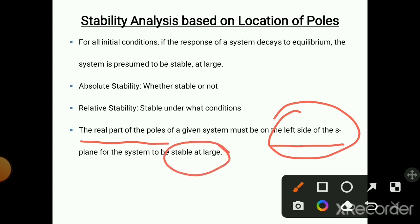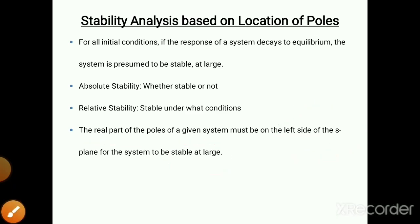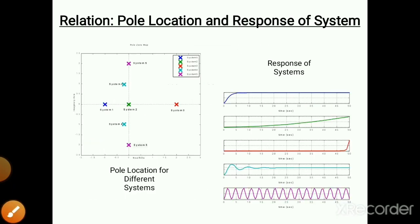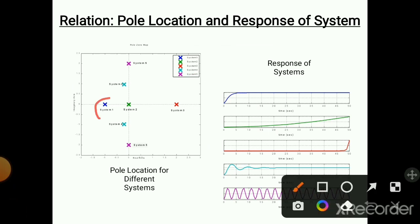For system number 1, the poles on the left side make the system stable. Also for system number 4, the poles are on the left-hand side, so the system is stable after only one or two peaks. The system is stable when poles are on the left-hand side of the s-plane.